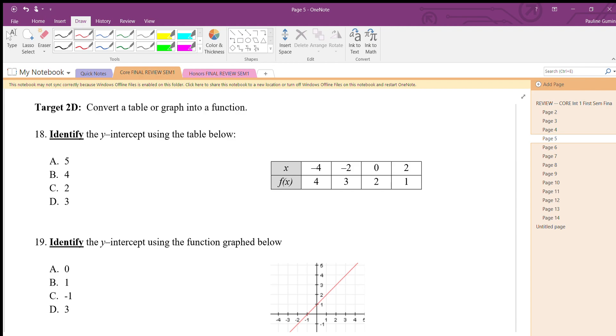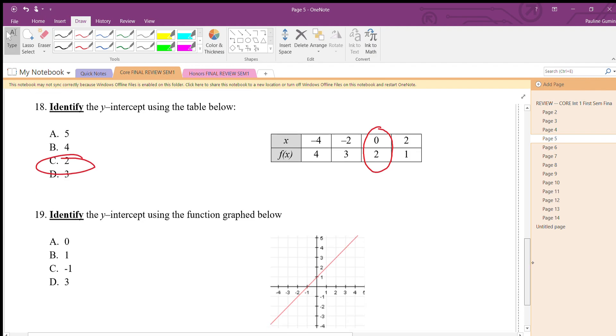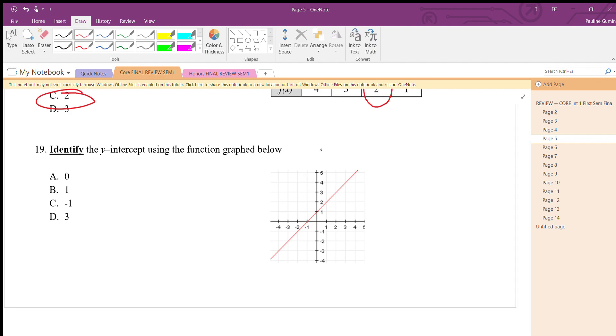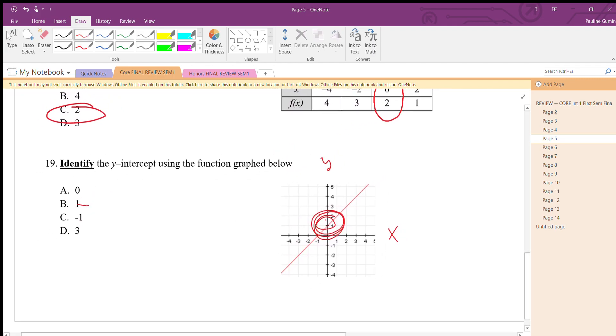In number 18, identify the y-intercept using the table below. I mentioned the y-intercept just now and maybe you were wondering what was so special about it. Well, if you take a look here, the y-intercept happens when x is zero. There it is, 19. We need to identify it graphically. The y-axis is the one that goes up and down vertically, and the horizontal one is x. Here is our y-intercept, it's at one.